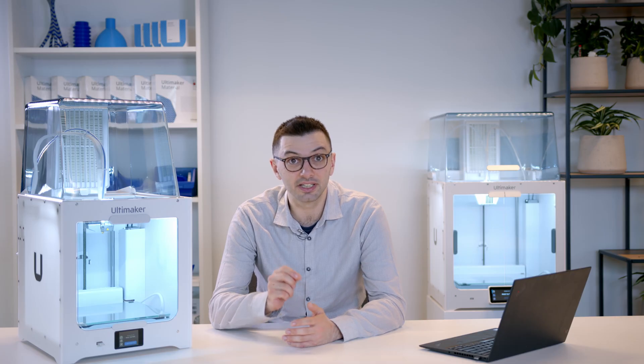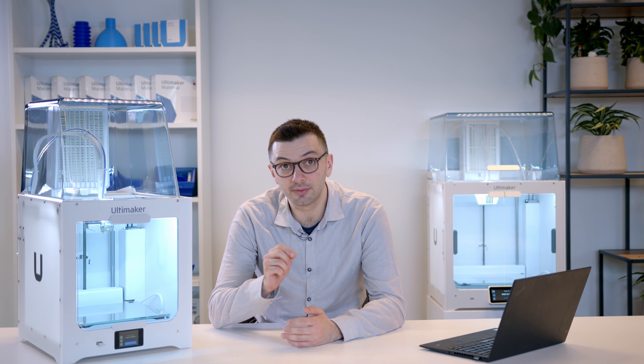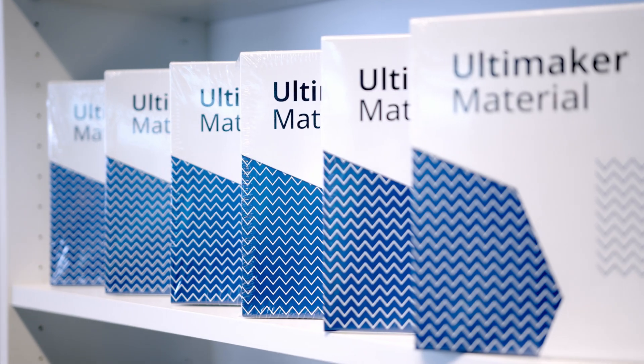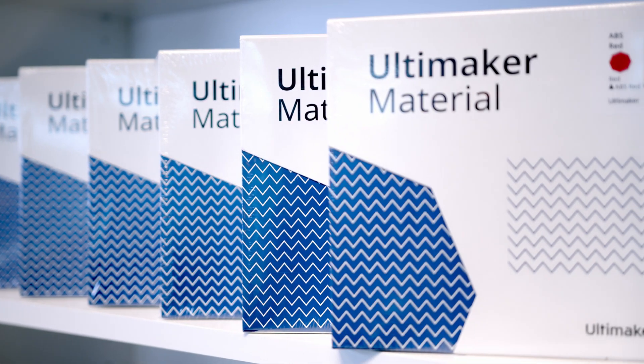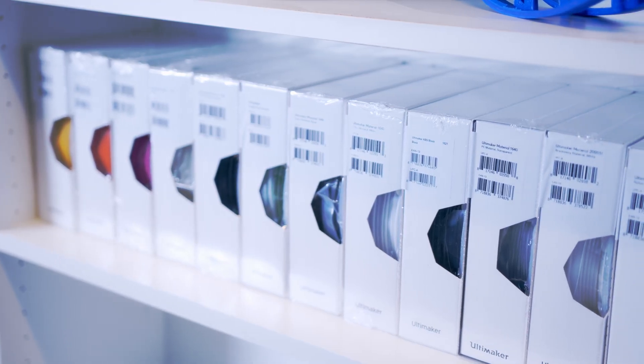Next up, we've updated how the printer handles materials. In order to be fully compatible with the Ultimaker materials ecosystem, it's important that the printer can correctly distinguish material brand, type, and color.